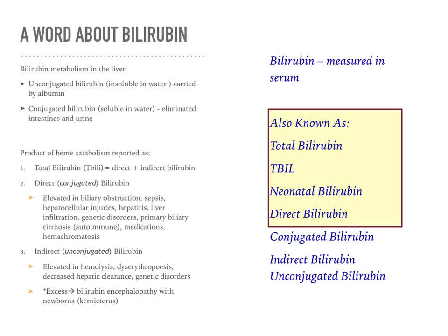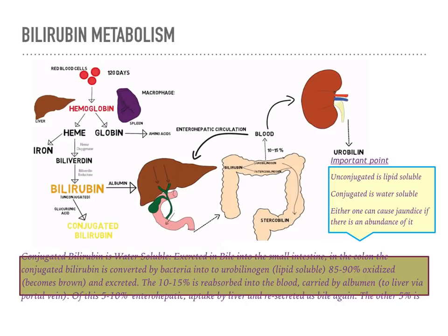Patients at risk for bilirubin issues include newborns — excess bilirubin can cause encephalopathy, also known as kernicterus. This chart shows a nice breakdown of bilirubin metabolism. Bilirubin is the breakdown product of red blood cells at the end of their 120-day lifespan. Hemoglobin is broken down into heme and globin — globin converts to amino acids, and heme is broken down into iron and bilirubin, which initially is unconjugated and then converts to the conjugated form.